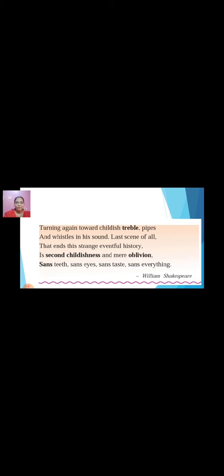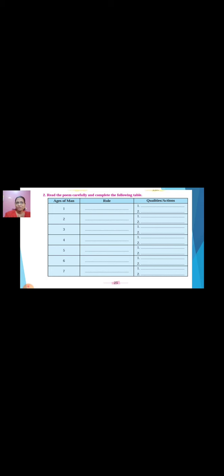What you have to do is read the poem carefully and complete the following table. All seven stages — you have to mention the role played and the qualities or actions of each stage. Everything is mentioned in the poem; try to write it in your own words. This is homework for you — do it in your book or on your assignment paper. So bye for now, take care, stay safe.